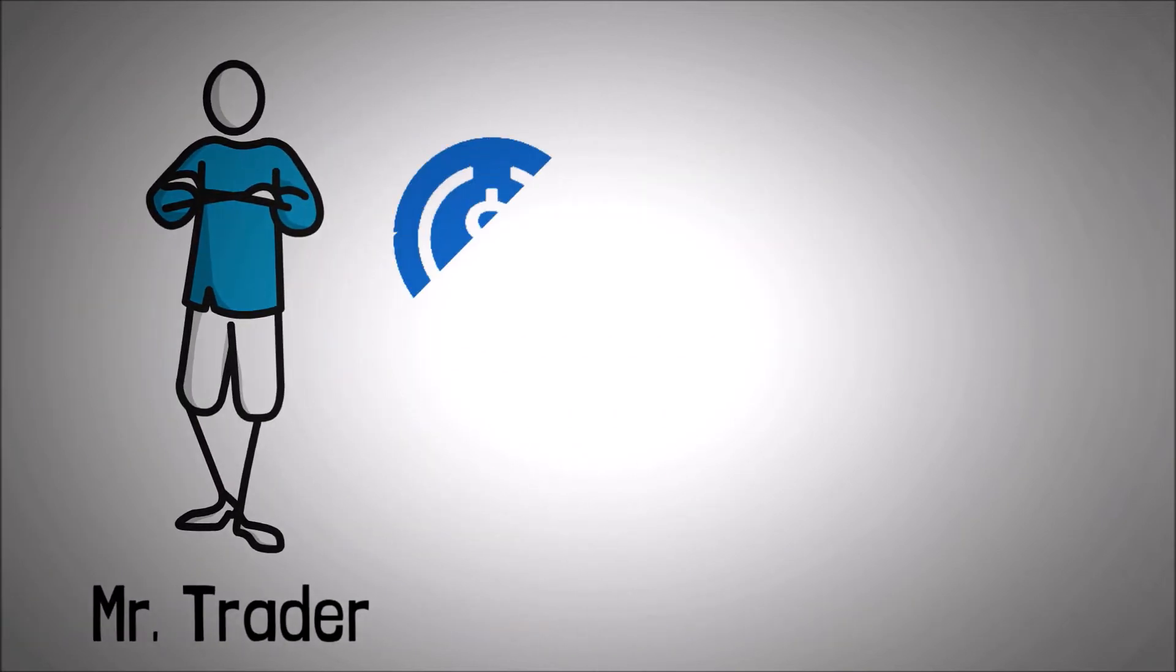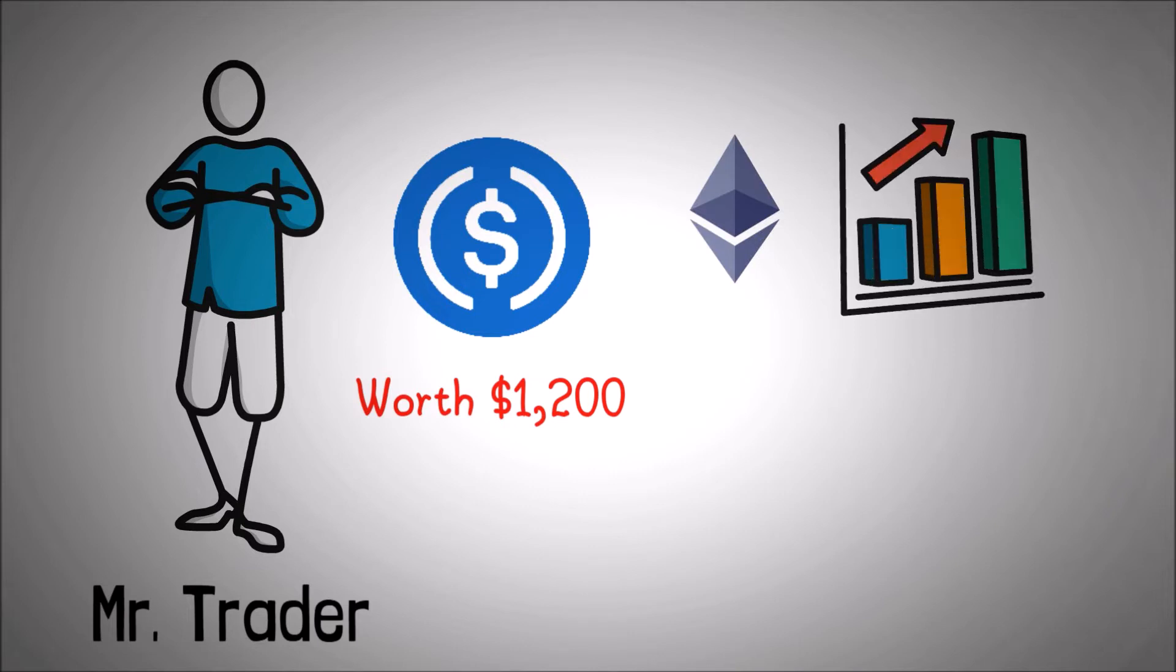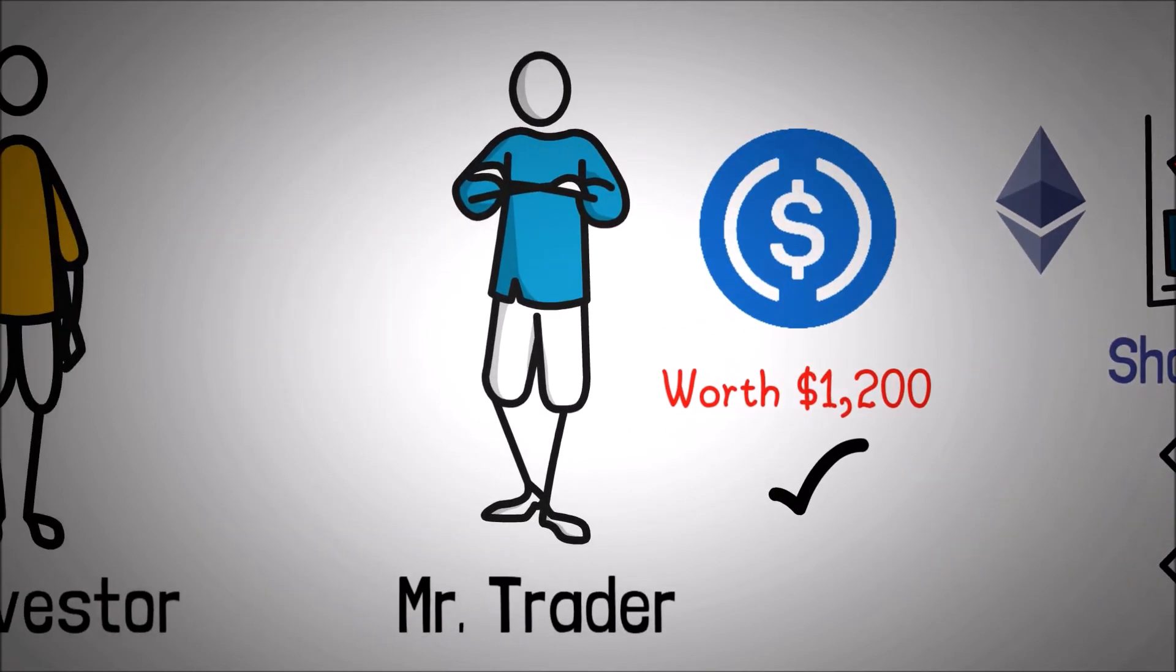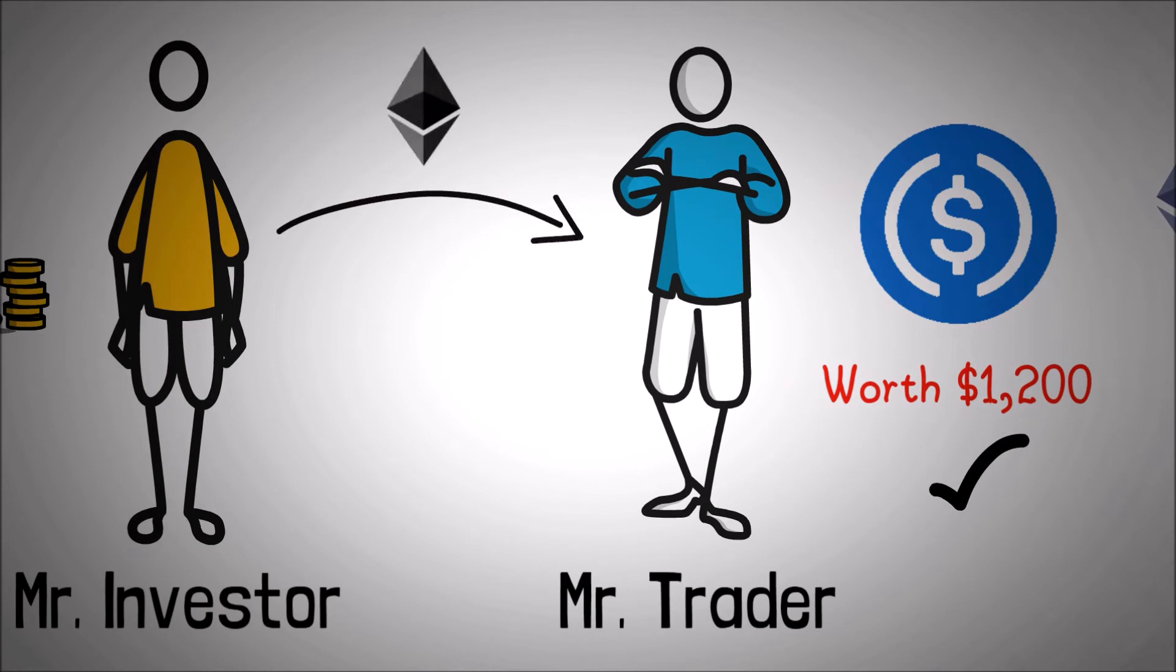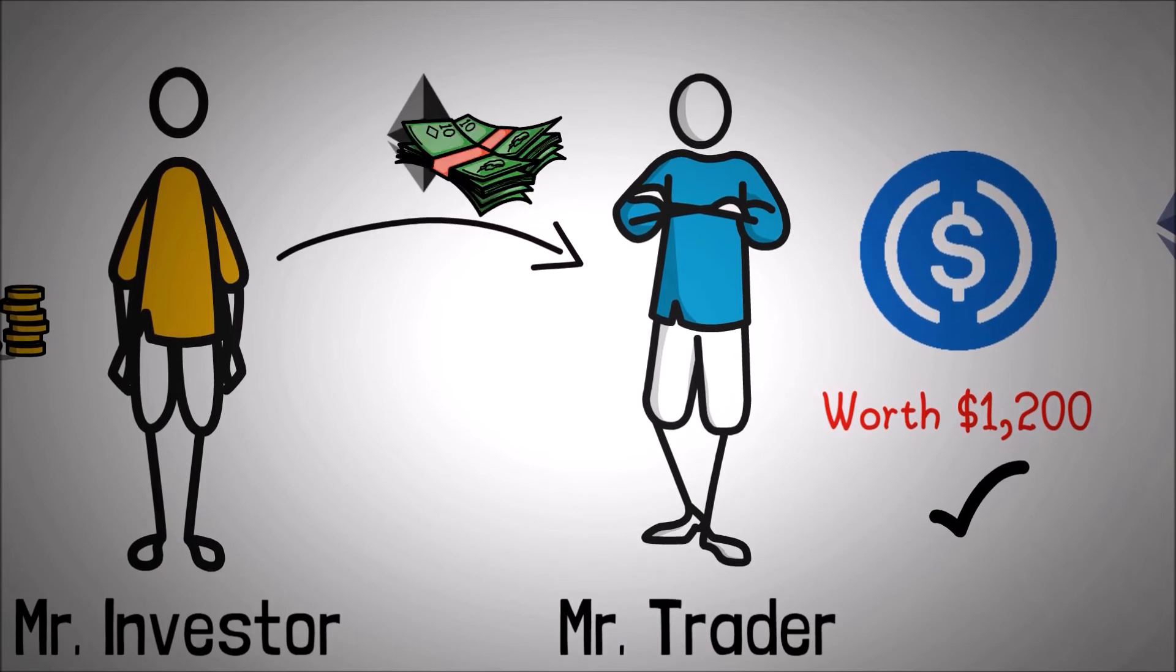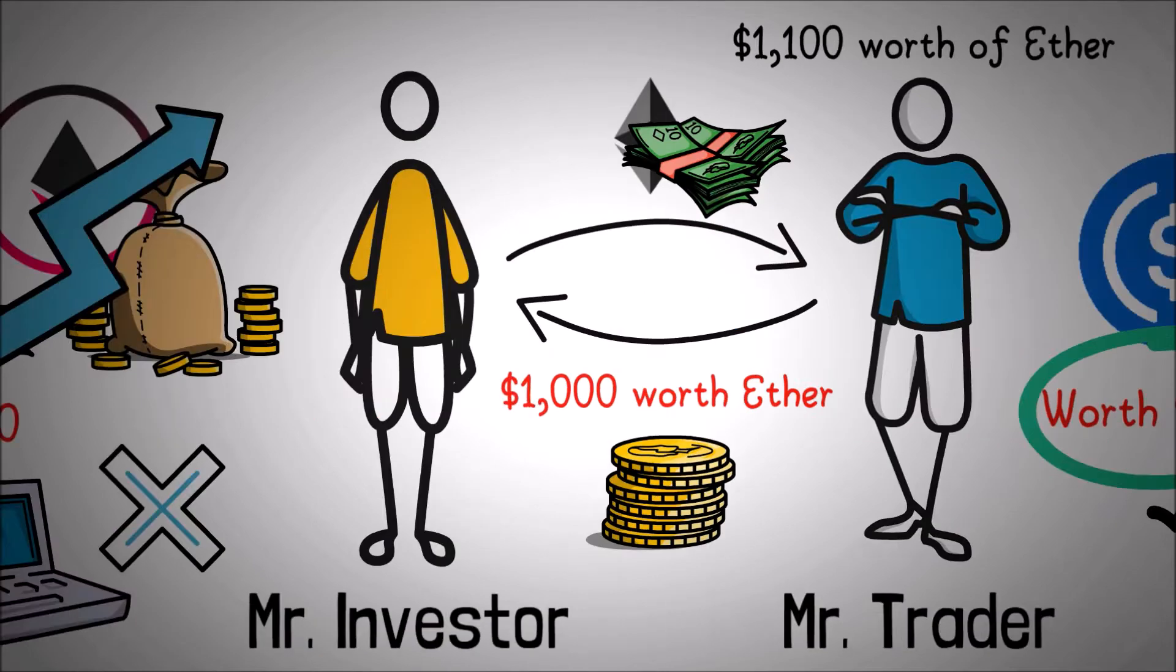Mr. Trader holds stablecoins USDC worth $1,200 but he believes the price of Ether is going to increase in the short term. Instead of buying Ether directly, Mr. Trader puts up $1,200 worth USDC as collateral to borrow $1,000 worth of Ether from Mr. Investor. Say Mr. Trader carries out several trades in Ether and makes $1,100 worth of Ether. He pays back $1,000 worth of Ether plus interest to Mr. Investor and releases $1,200 worth of USDC back.